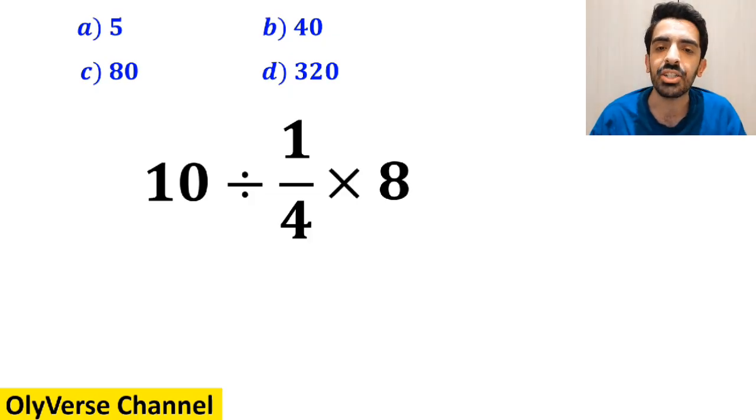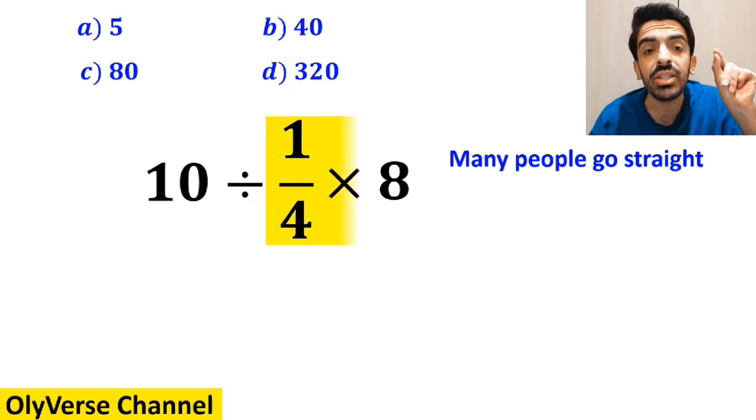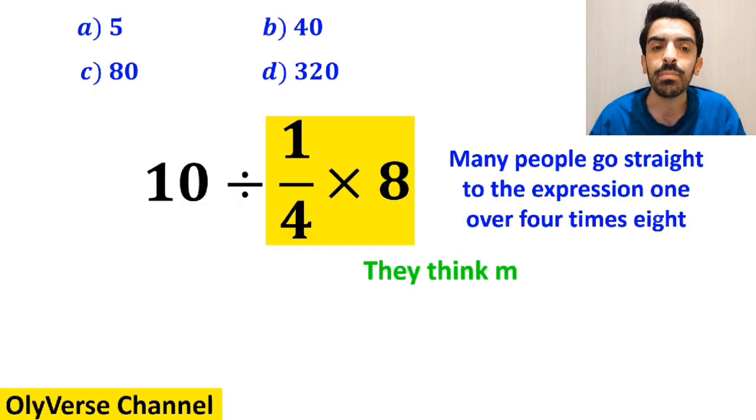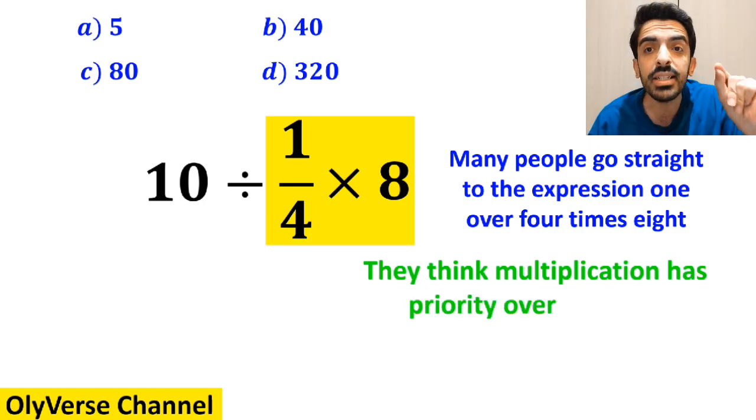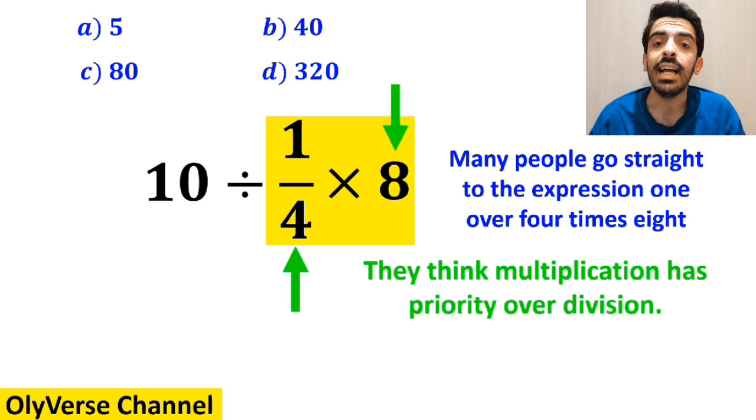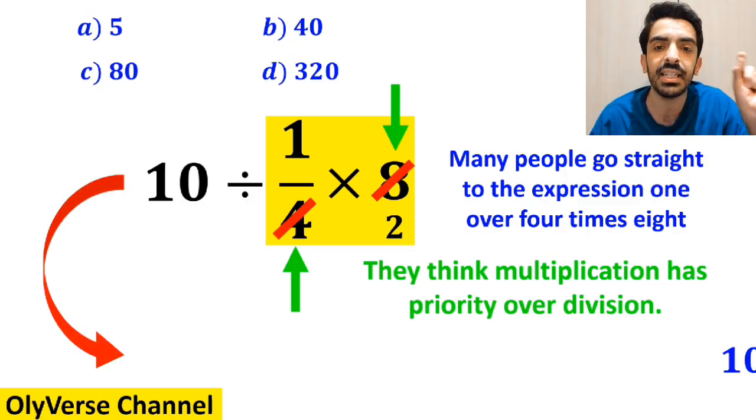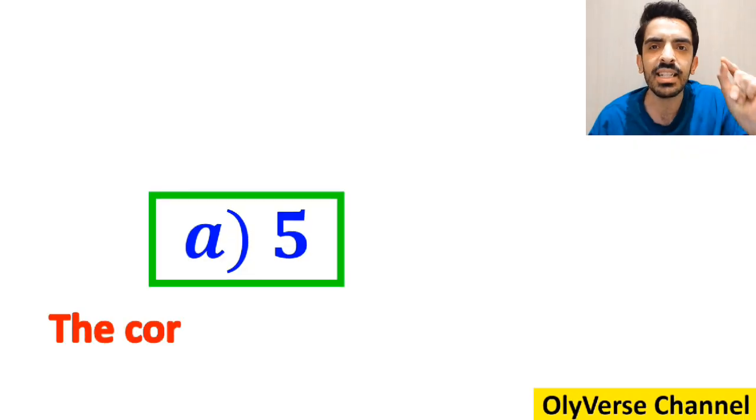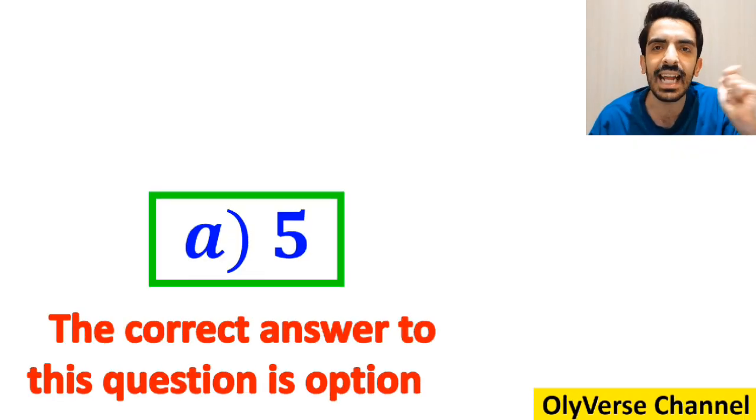At the beginning of solving this question, many people go straight to the expression 1 over 4 multiplied by 8, which I've highlighted in yellow, because they think multiplication has priority over division. And they say it's easy to simplify the 8 with the 4 in the denominator and write this expression as 10 divided by 2, which finally gives them the answer 5. Then without any hesitation, they immediately say that the correct answer to this question is option A.